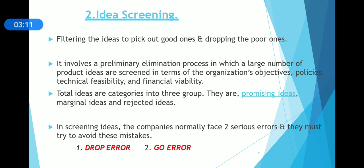In idea screening, we divide the ideas into three categories: promising ideas (which we accept and move forward with), marginal ideas (which we think we can change), and rejected ideas (which we reject). When we face these ideas, we basically face two types of errors: the drop error and the go error. Companies must try to avoid both these errors.